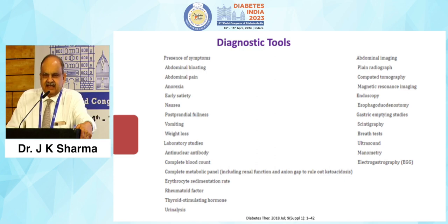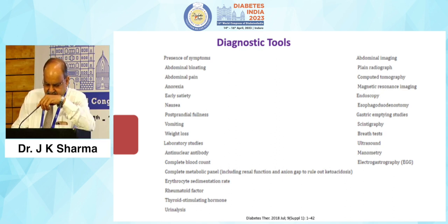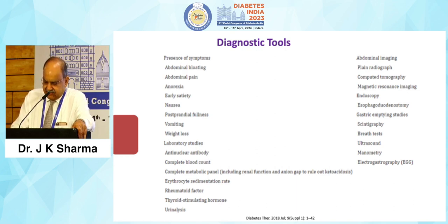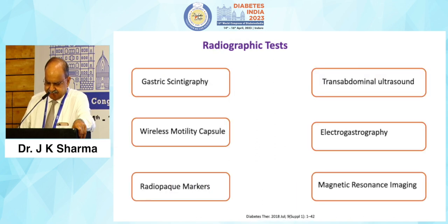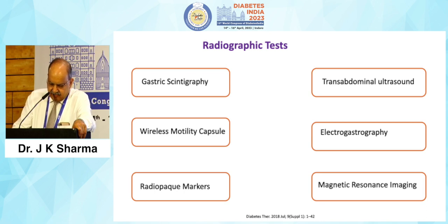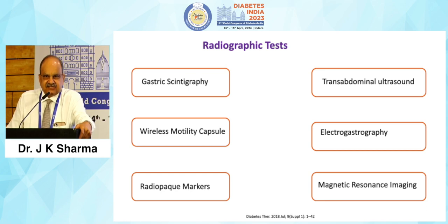If diabetic control is poor and there is long-standing diabetes, the patient may be having autonomic dysfunction where other systems are also involved. Analyze for other associated metabolic disorders like thyroid disease. Then abdominal imaging — plain radiograph, computed tomography, MRI, endoscopy, esophagogastroduodenoscopy, gastric emptying studies, scintigraphy, gastric scintigraphy, wireless motility capsules, radio-opaque markers, transabdominal ultrasound, electrogastrography, and magnetic resonance imaging — all these studies are done by the gastroenterologist in their lab.